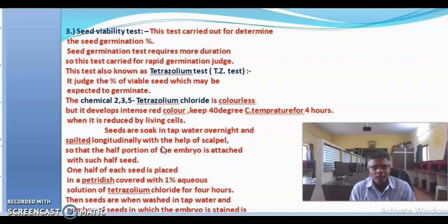This test is carried out in seed testing laboratory for rapid detection of germination percentage. The procedure of this test is: seeds are soaked in tap water overnight or near about 12 hours. Then the seeds are split longitudinally with the help of scalpel so that the half portion of the embryo is attached with such half seeds.